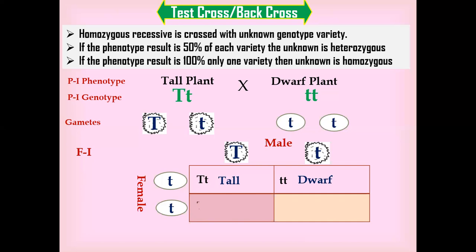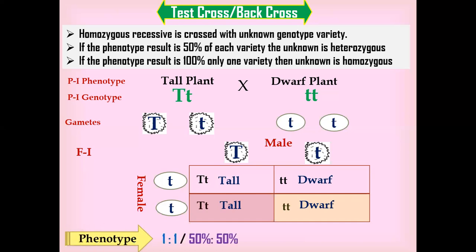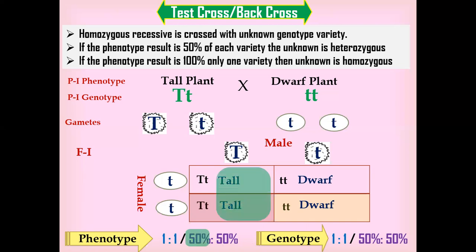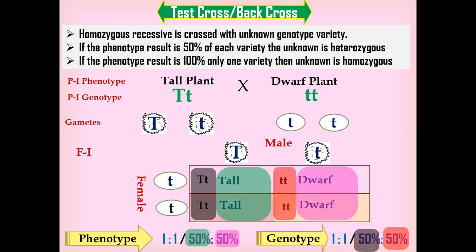The other ovules behave similarly. The phenotypic result is 50-50%, and the genotypic result is also 50-50%. The phenotype shows 50% tall and 50% dwarf, while the genotypic result shows 50% heterozygous (capital T, lowercase t) and 50% homozygous recessive. Our unknown variety is therefore confirmed to be heterozygous, with a 50-50% result.